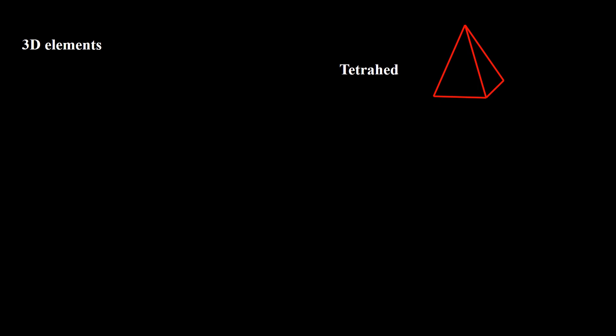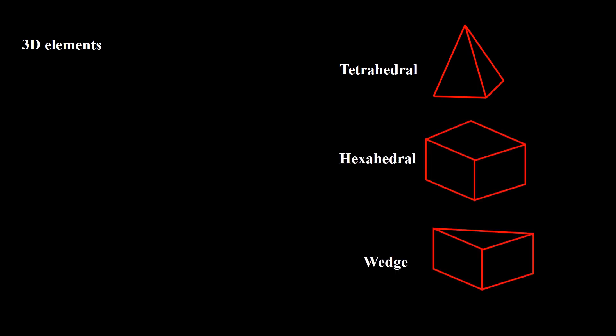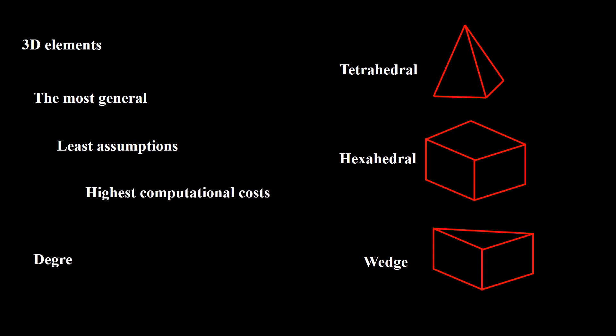If your problem satisfies neither structural element requisites nor 2D element requisites, you should use 3D elements. Tetrahedral, hexahedral, and wedge are the three types of 3D elements; all of them can be first-order or second-order. Three-dimensional elements are the most general elements with the fewest assumptions and can model all previously mentioned problems, but they have the highest computational cost. A 3D element has three translational degrees of freedom at each node. Thanks for watching — please subscribe to our channel to find more videos about mechanics and FE simulations.